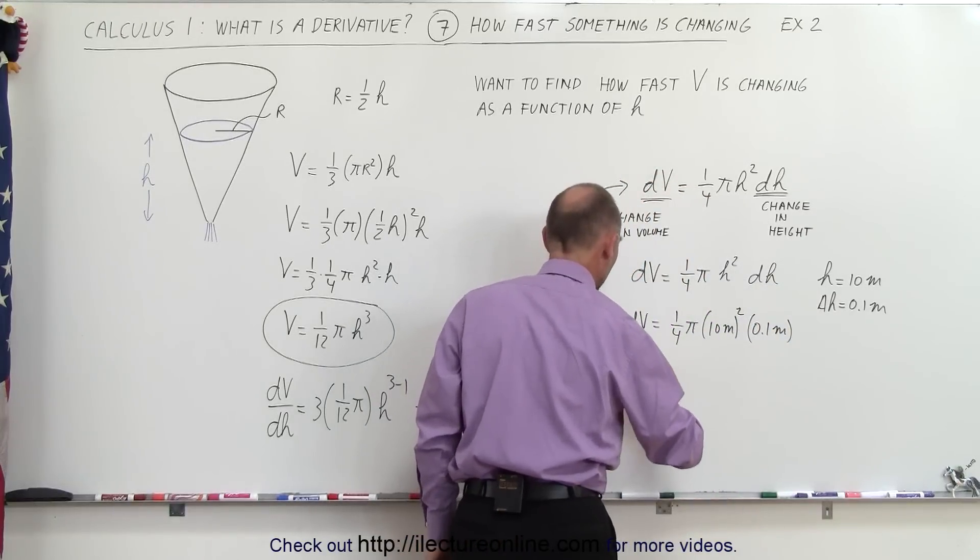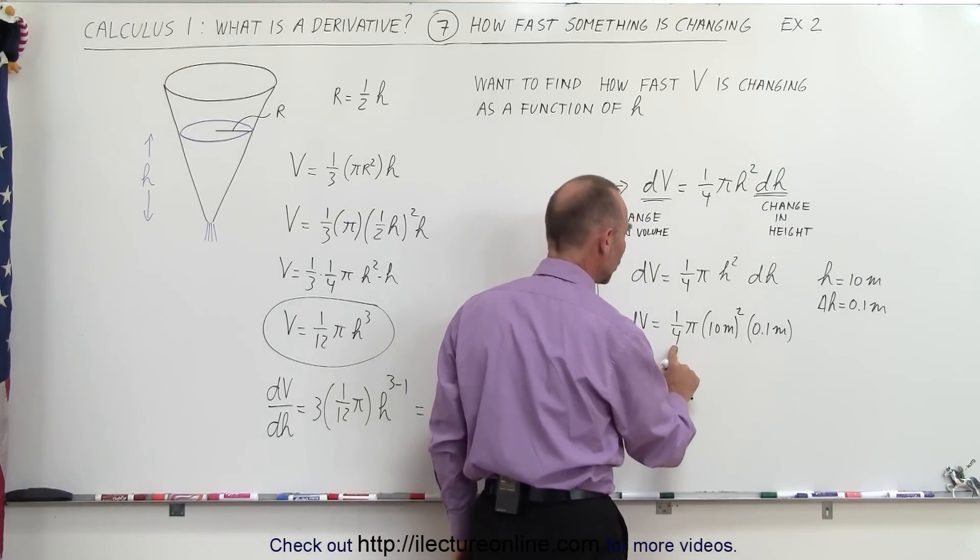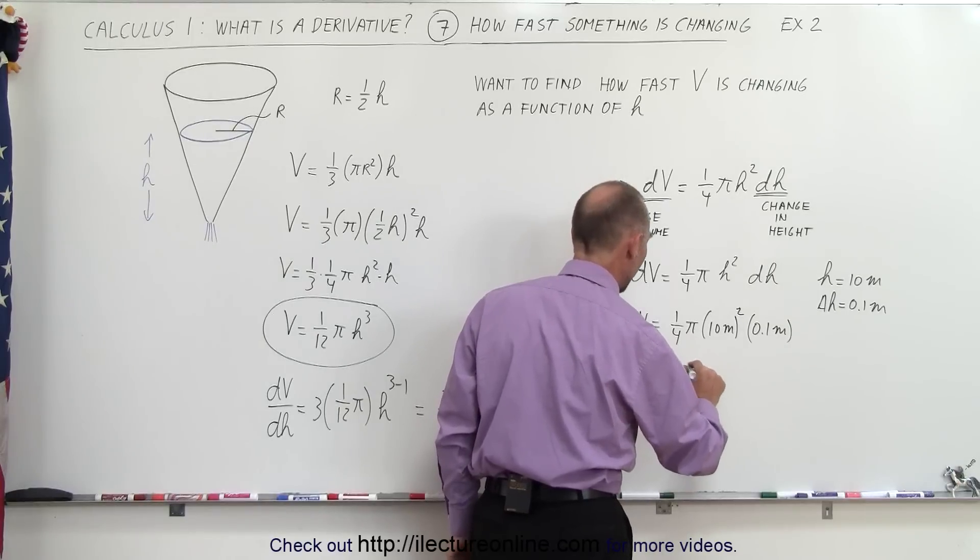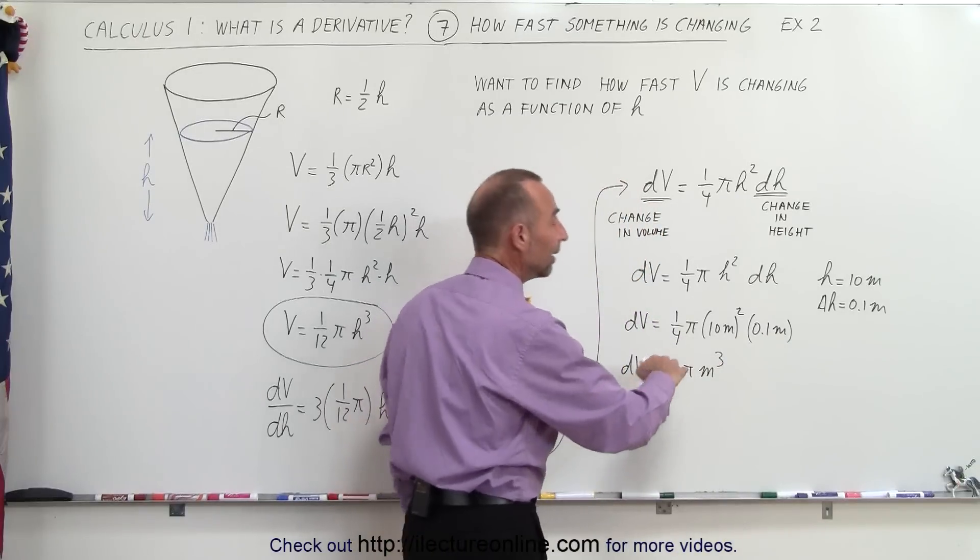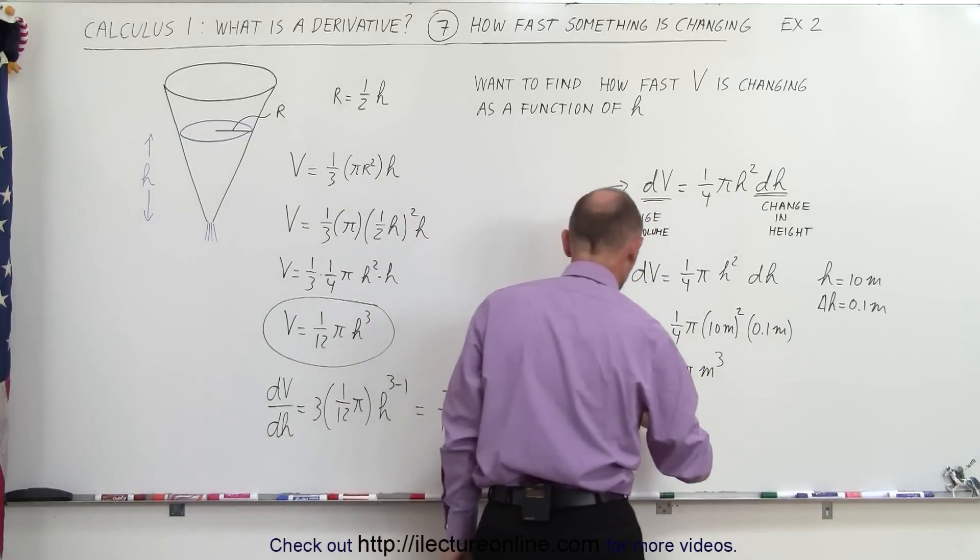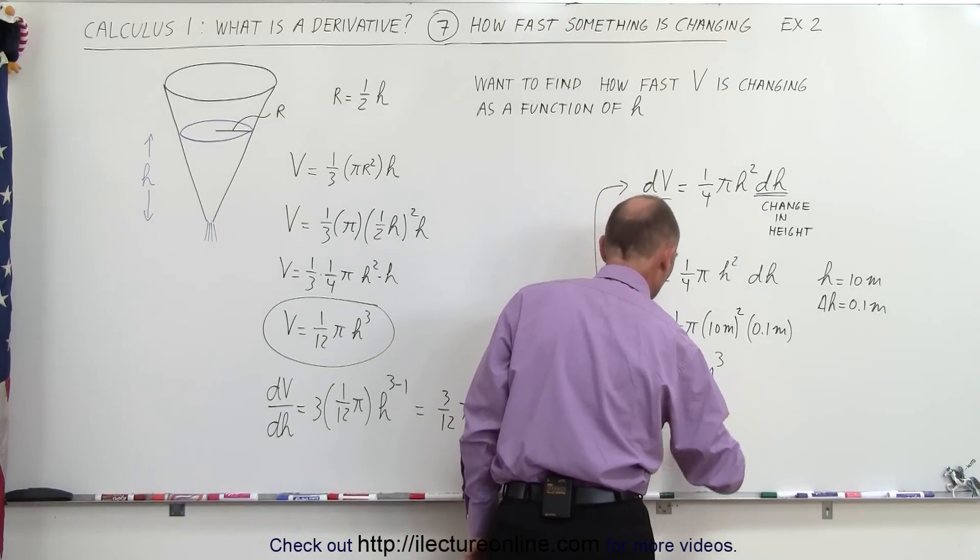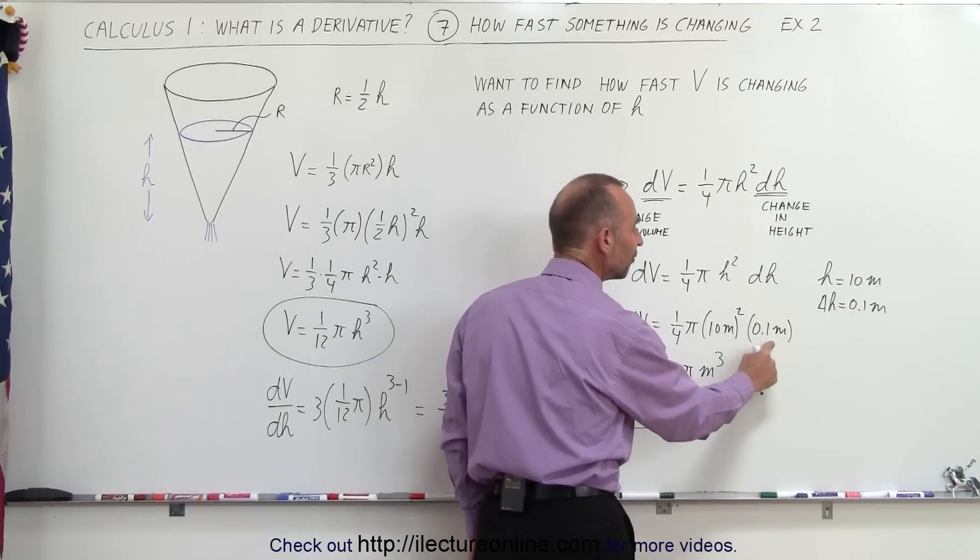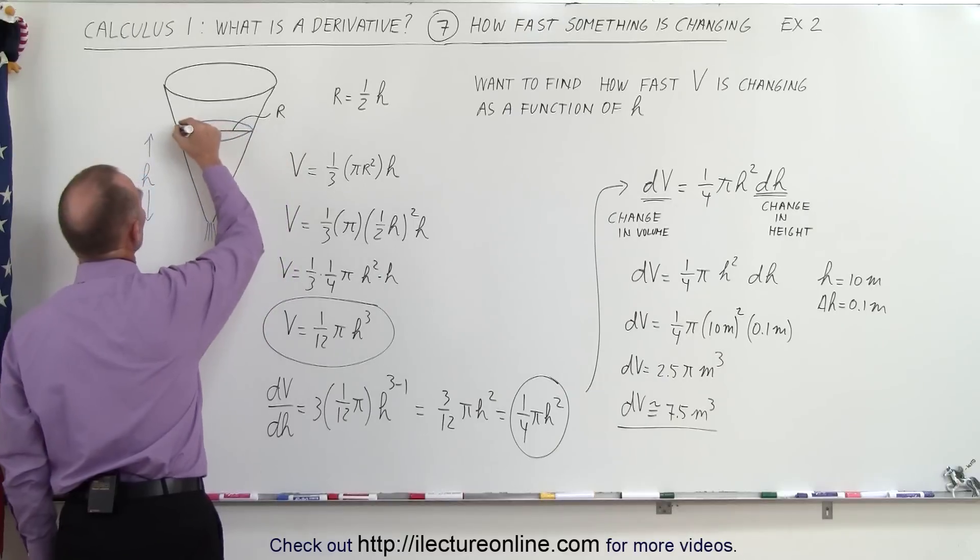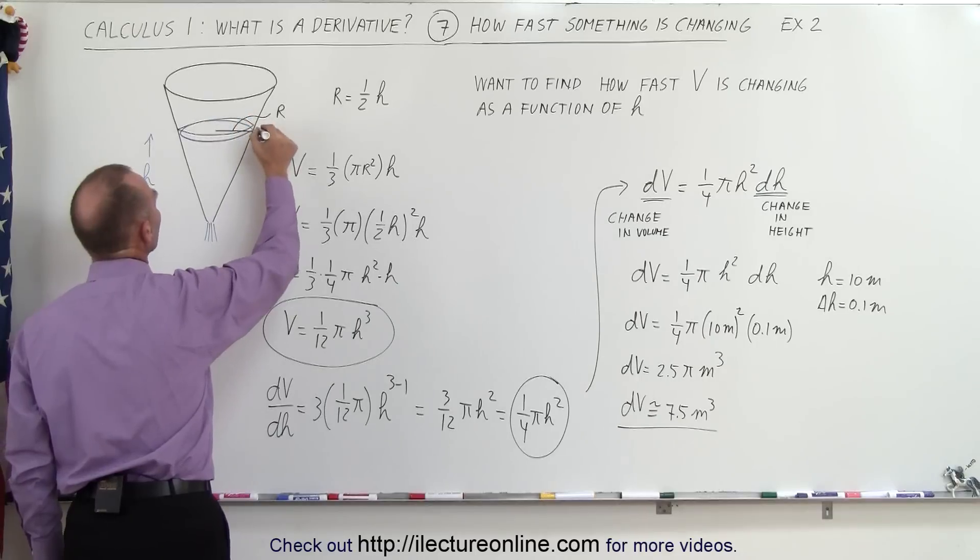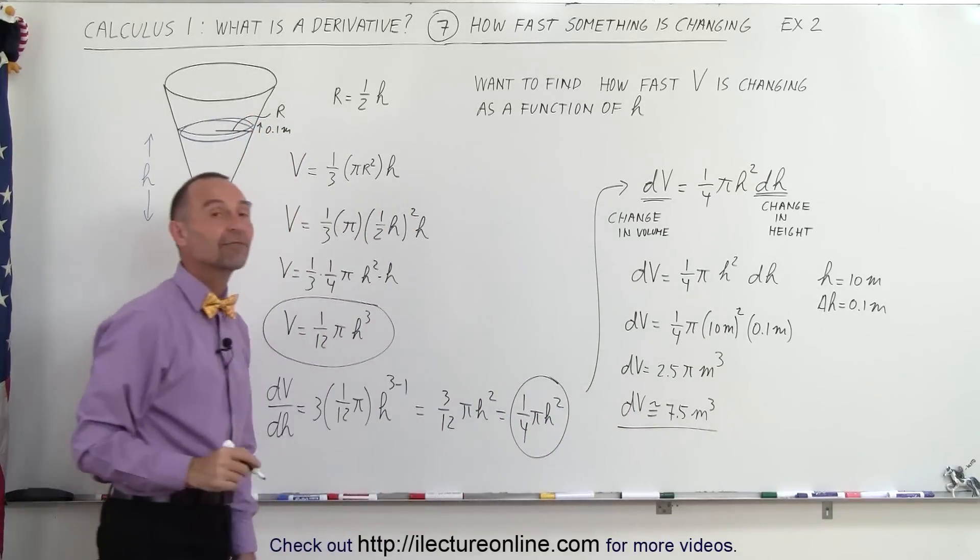Alright, let's work that out. So dV would be equal to, that would be 100 times 0.1, which is 10, divided by 4, which would be 2.5. So 2.5 times π times meters cubed, because it's meter squared times meter, which is meter cubed, and π is about 3.14. So that means that dV would be approximately 7.5 meters cubed when the height changes one-tenth of a meter when the height was already at 10 meters. So that means that if the height was 10 meters and it changed another additional tenth of a meter when it went up 0.1 meter, the volume would change by 7.5 meters cubed.